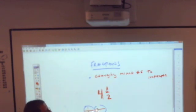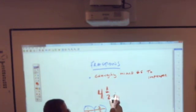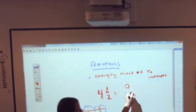4 and 1 half, how many total halves is that? Well, here's 1 half, 2 halves, 3 halves, 4 halves, 5 halves, 6 halves, 7 halves, 8 halves, and there's 9. So this, as an improper fraction, is 9 halves.